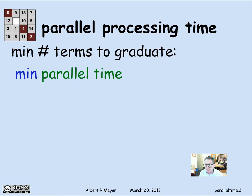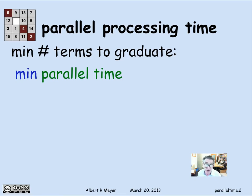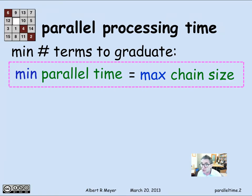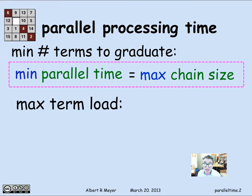If we look at the minimum number of terms to graduate, this corresponds to the minimum number of stages — or the minimum amount of time — it takes to process a bunch of tasks, assuming you can do tasks in parallel with no limit on the amount of parallelism allowed. In that case, the minimum parallel time for a bunch of constrained tasks is simply the maximum chain size in the constraint graph. We saw that with the course prerequisites, where it was five, and in general this is the theorem: minimum parallel time equals maximum chain size for chains in the graph constraining task order.